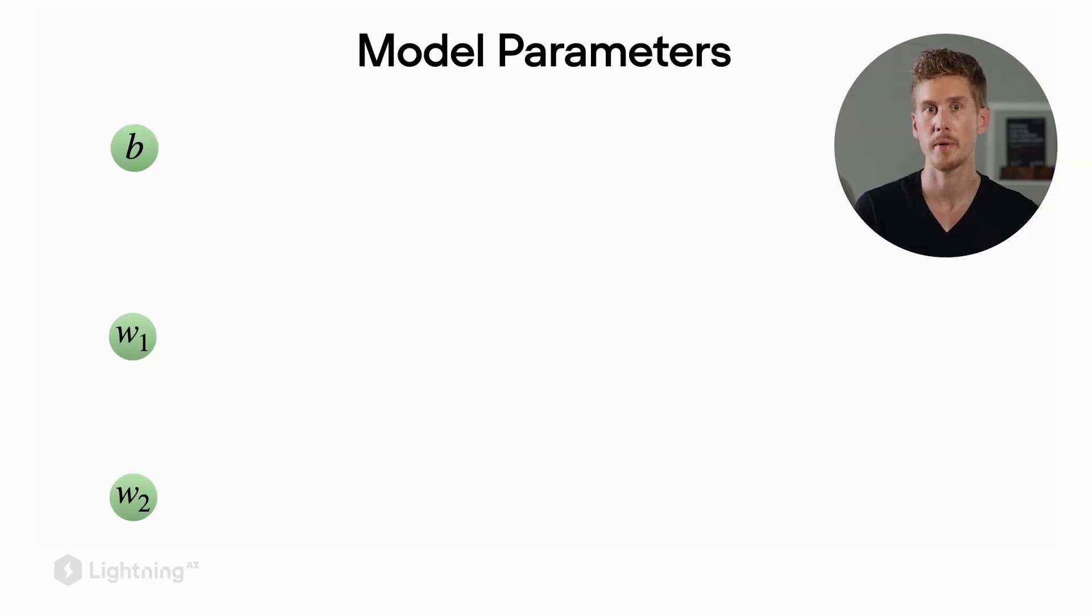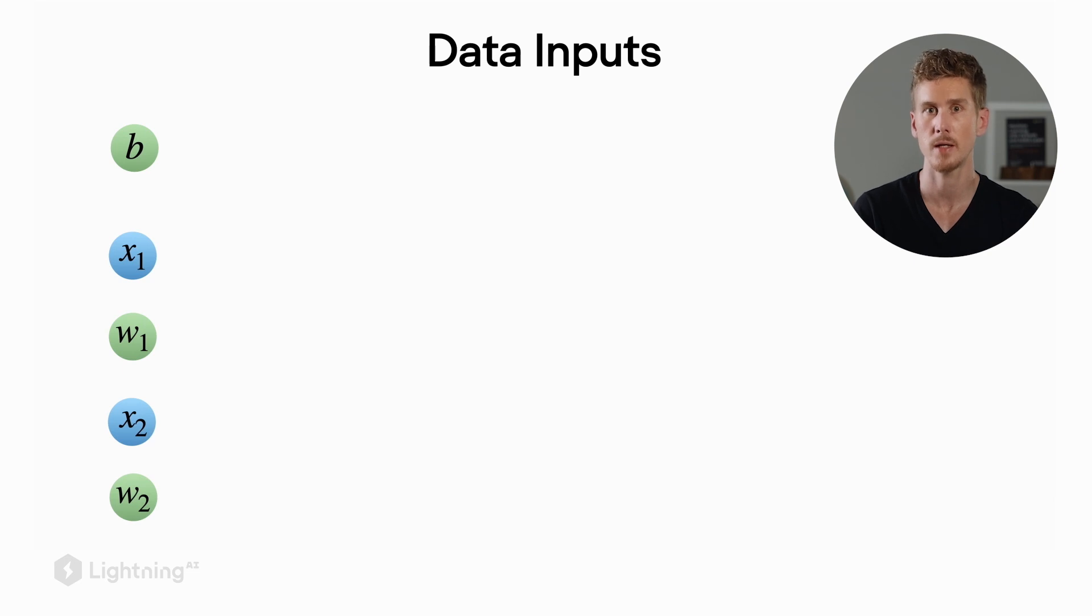Let's start by looking at the model parameters. Here we consider a two-dimensional dataset to make it fit on the slides. We have two weight parameters, w1 and w2, plus the bias unit b at the top. Then we have the data inputs x1 and x2 corresponding to the two features in the dataset.